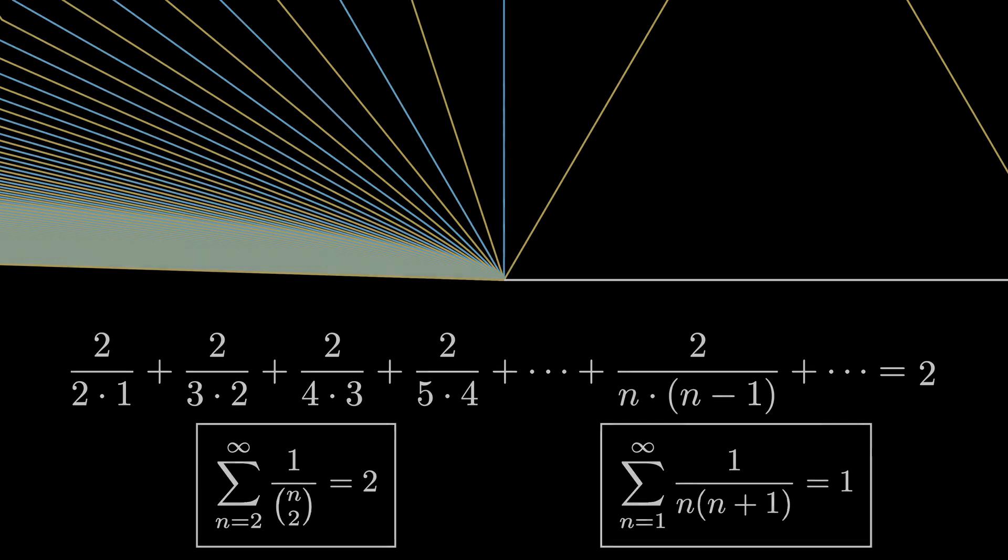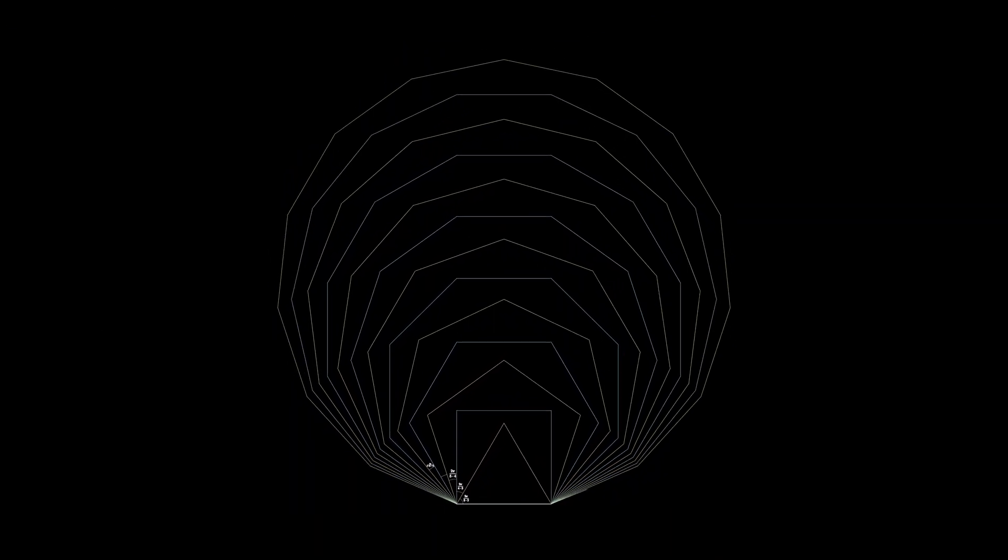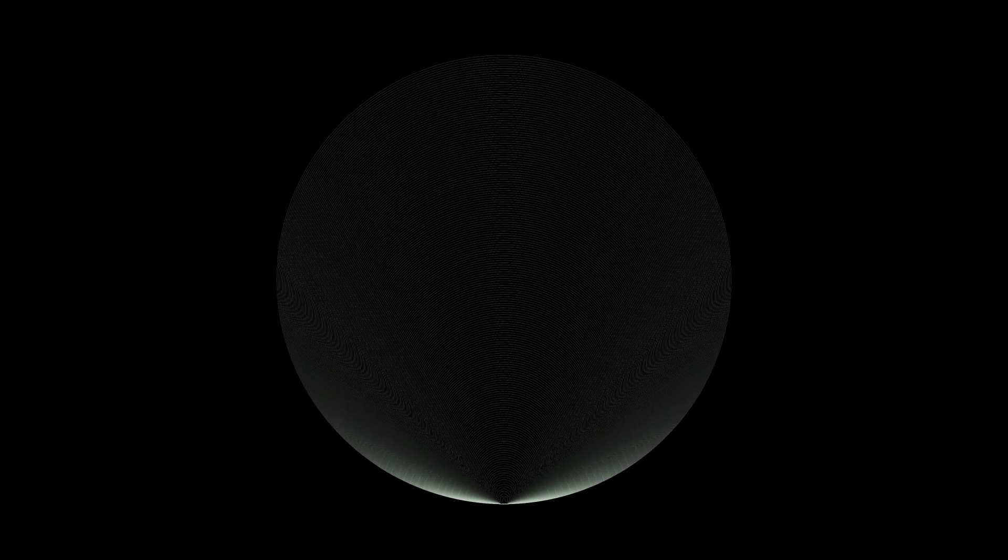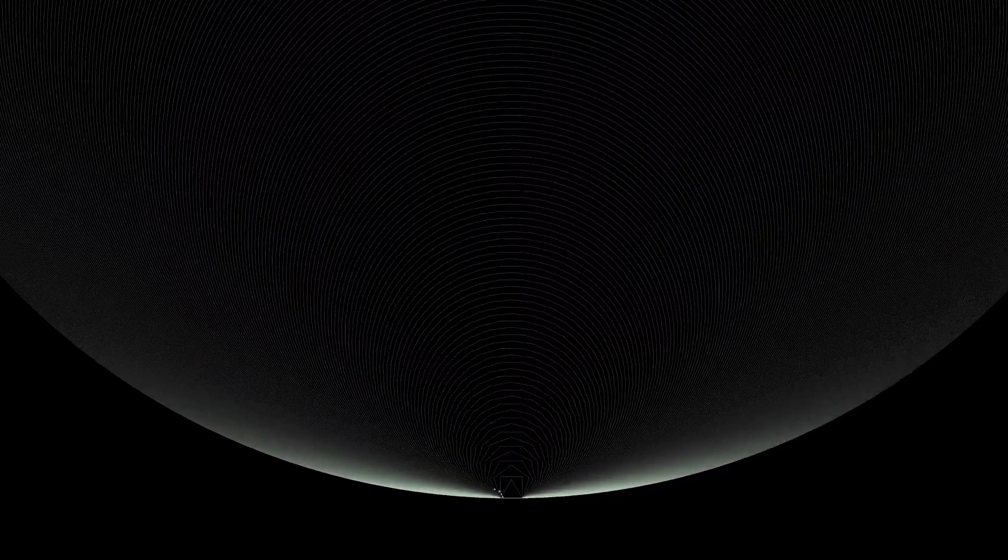These infinite sums are usually computed by recognizing the infinite series as a telescoping series, but here we've shown how to find this infinite sum using a limiting process on an amazing diagram constructed by larger and larger regular polygons.